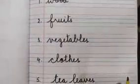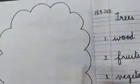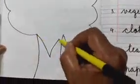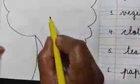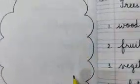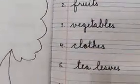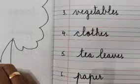Now on the blank page children, you can draw a big tree like this. Draw a big tree on the blank page like this. And then you can paste pictures of all the things which the trees give us: trees give us wood, fruits, vegetables, clothes, cereals, tea leaves, paper, rubber, and so many other things.